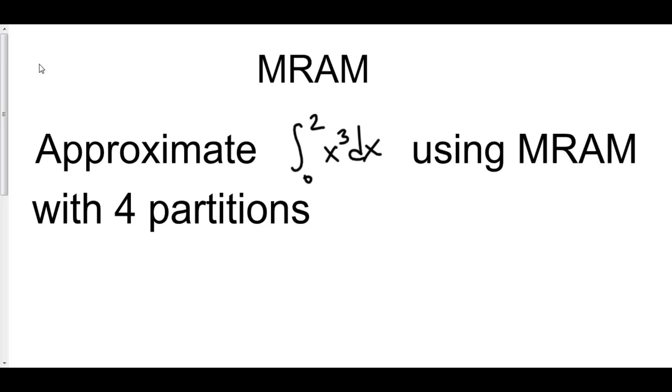Now we're going from 0 to 2, and we have to use 4 equal partitions. What that means is we have a distance of 2 broken up into 4 equal parts, each of those different parts will have a distance of 0.5, or 1 half.